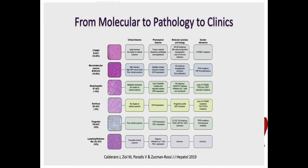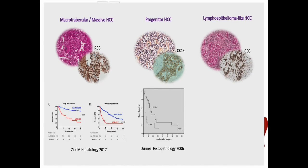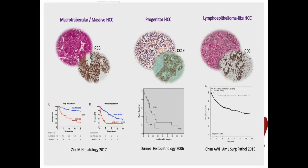These subtypes are associated with clinical and pathological features. For example, the macrotrabecular massive HCC subtype, characterized by a mutated P53 profile, and the progenitor hepatocellular carcinoma subtype, characterized by overexpression of stem cell markers, are clearly associated with poor prognosis. While the lymphoepithelioma-like HCC subtype, characterized by significant inflammatory infiltrate within the tumor, is clearly associated with a good prognosis.